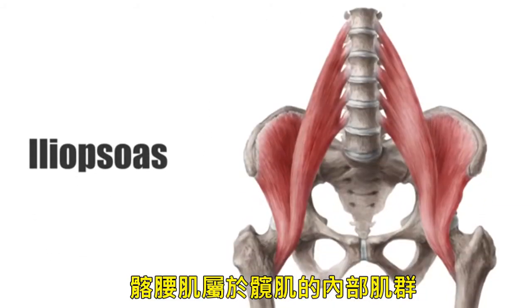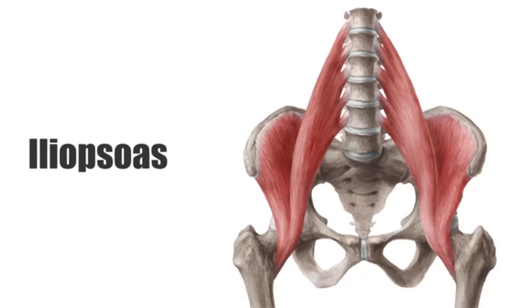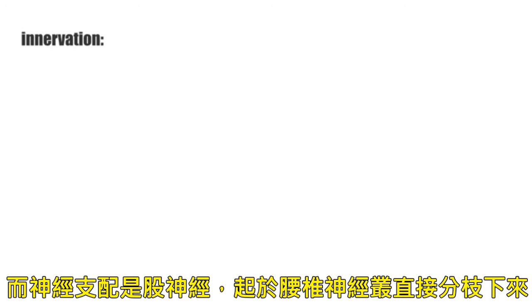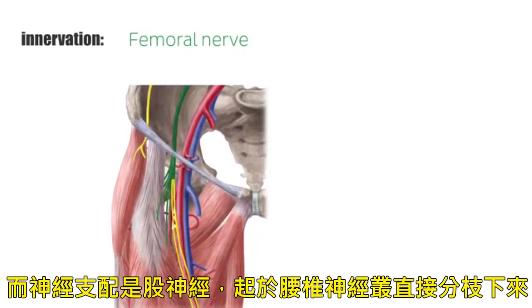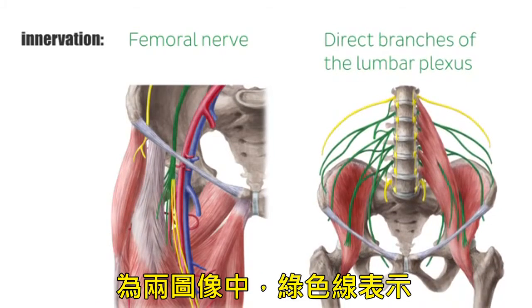The iliopsoas muscle belongs to the inner hip muscles. It consists of a complex of two muscles with different areas of origin. The iliopsoas belongs to the striated musculature, and the innervation is carried by the femoral nerve as well as the direct branches of the lumbar plexus, both seen highlighted in green on these images.